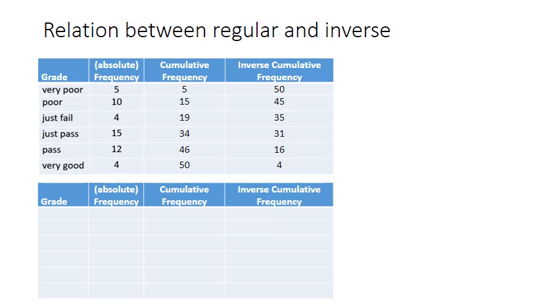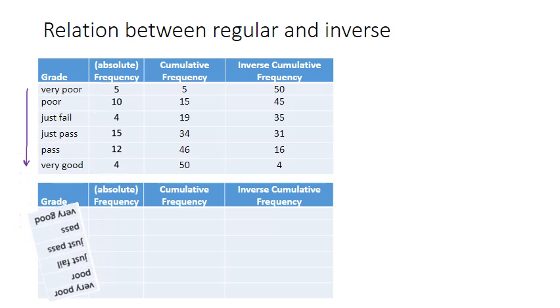As a last note, there is some relation between regular cumulative frequencies and inverse cumulative frequencies, because it deals with how the values are sorted. In this case, they are sorted from very poor to very good. But if I flip that around and take the absolute frequencies and flip those so they still match, then I can calculate the cumulative frequencies again.